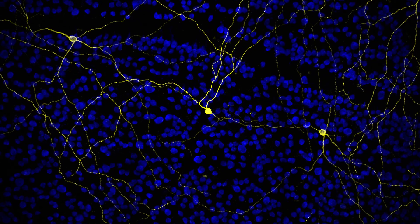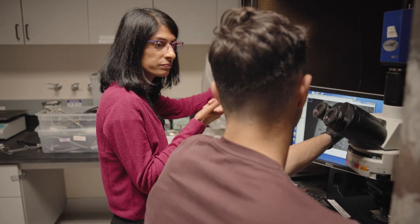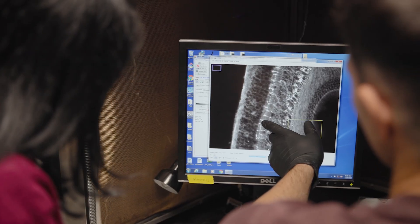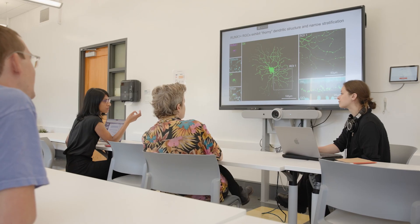The retinal ganglion cells are the output neurons of the retina. They send visual signals from the eye to the brain. We have around 20 to 30 distinct ganglion cell types, each of which extracts specific features from the visual scene.